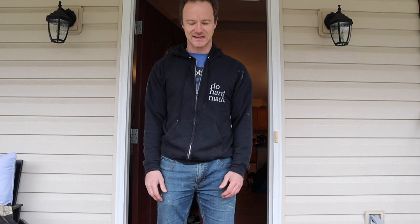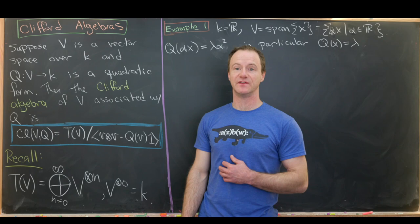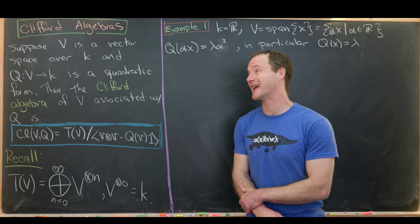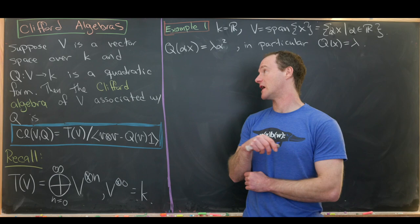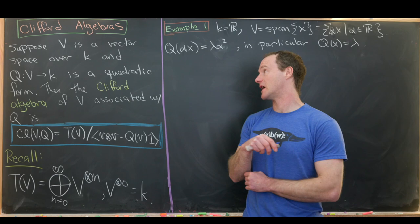Today we're going to look at a very highly suggested video, and it builds off of some videos that we've already done regarding the tensor product, the tensor algebra, and using the tensor algebra to construct symmetric and exterior algebras. And here we're going to look at something called a Clifford algebra. This is a bit technical, so we're going to work through a couple of basic examples first after looking at the definition.